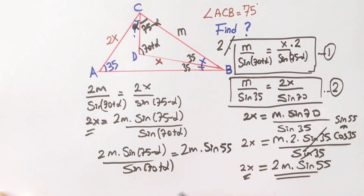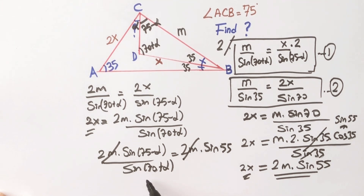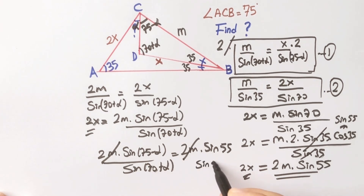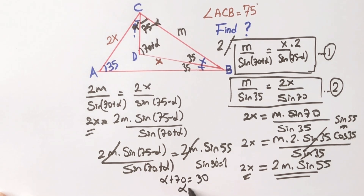If we equalize the two expressions, M·sine(55) equals M·sine(55), these cancel. We know that sine(90) is 1, therefore 70 plus alpha must equal 90 degrees, so alpha is going to be 20 degrees. That was the first method.